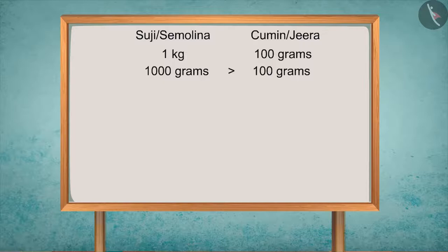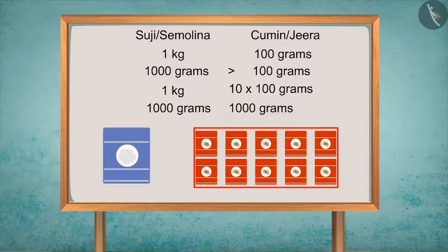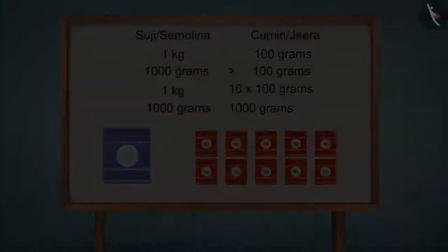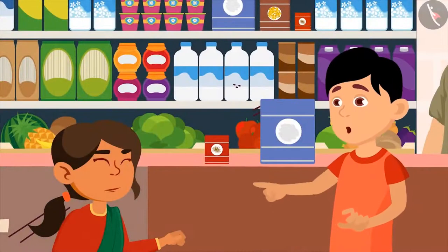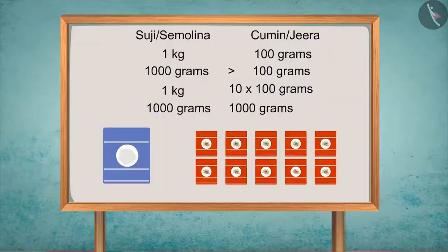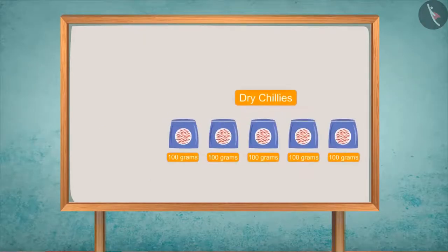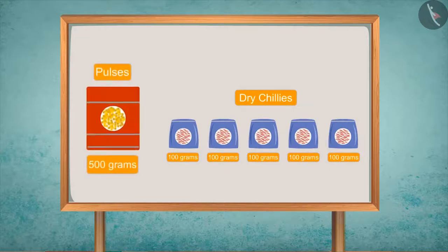And if we put 10 packets of 100 grams together, then their total weight would be 1000 grams, which would be equal to 1 kg of sooji. Neetu, you are getting very smart! Like this, 5 packets of 100 grams of dry chilies weigh the same as 500 grams of pulses.